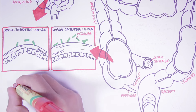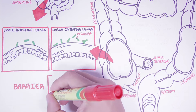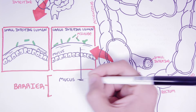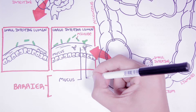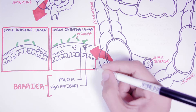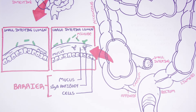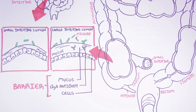Therefore, we can see how that mucus helps keep these bacteria from causing any harm. Also, the antibodies that are part of the mucosal system, as well as the tight junctions between the intestinal cells, help in this respect. So there is a lot of barrier here, allowing these bacteria to live within us in a symbiotic mutualistic relationship.